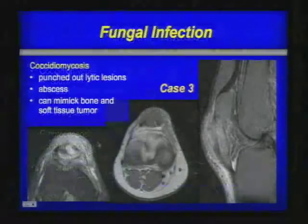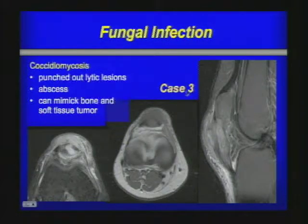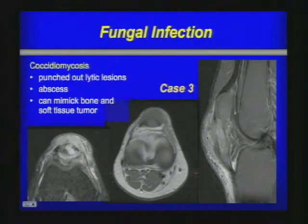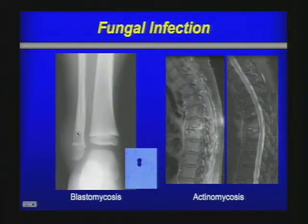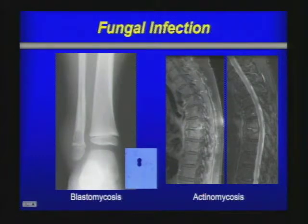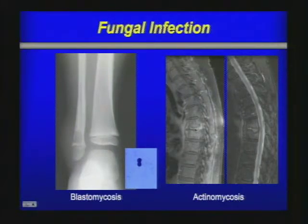Case number three — the patient with Hodgkin's disease — turned out to have coccidioidomycosis. She was immunosuppressed, likely contributing to the severe infection. A case of blastomycosis shows a lesion in the distal fibula that can resemble a tumor. Actinomycosis shows disc destruction but without a very aggressive pattern, with minimal surrounding fluid.